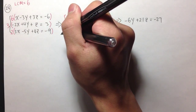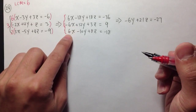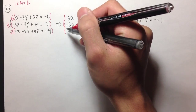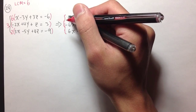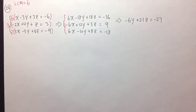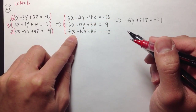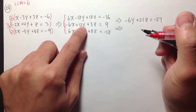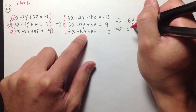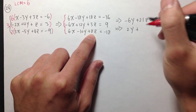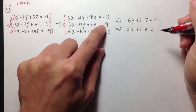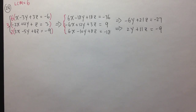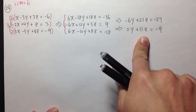Then I combine the second and third equations. Negative 6x plus 6x is again zero. That's why we want to have the same coefficients — positive, negative, positive — so they cancel automatically. This gives 12y minus 10y, which is 2y, plus 3z plus 8z, which is 11z, equals 9 plus negative 18, which is negative 9. So now we've gotten rid of x.